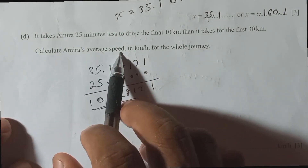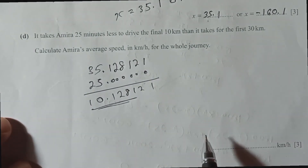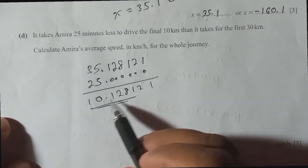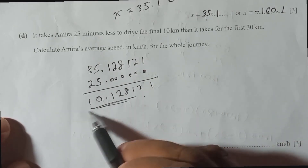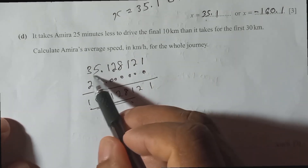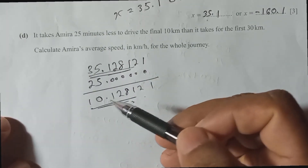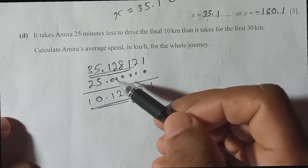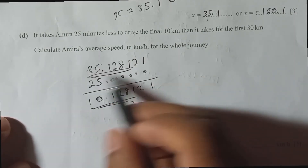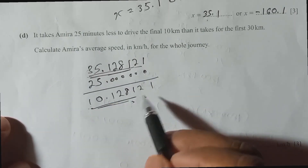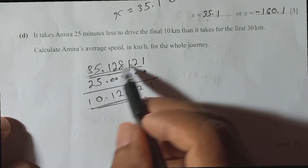They ask: calculate Amira's average speed in km per hour for the whole journey. We know the time for the last 10 km and the time for the first 30 km. So we can find the total time by adding them together. It's always better to use the full unrounded figures in calculations.